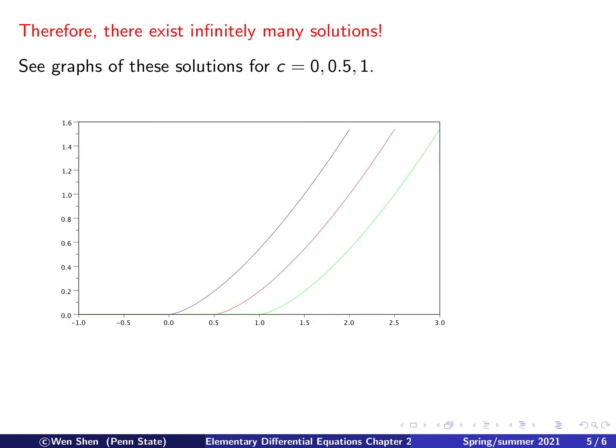So this is a rather extreme example, where infinitely many solutions exist for one single initial value problem. Here I provide some solutions in a graph.